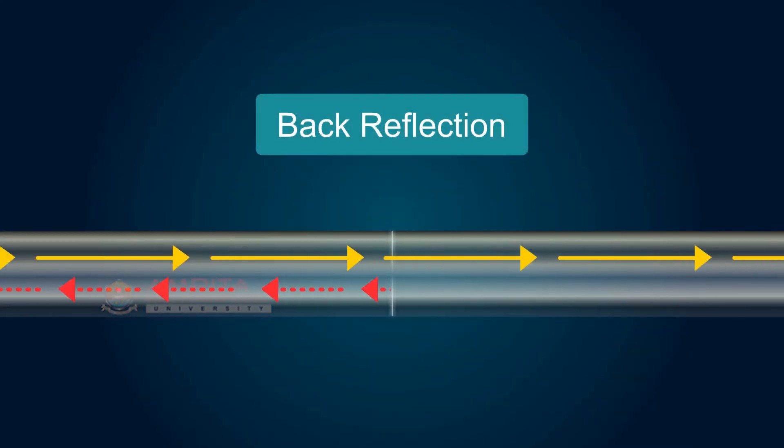Back reflection is the percentage of power reflected back from a particular point in a light path. It is usually expressed in negative dB.